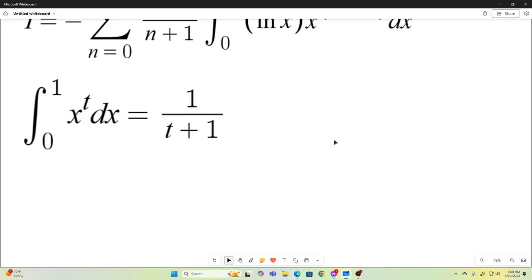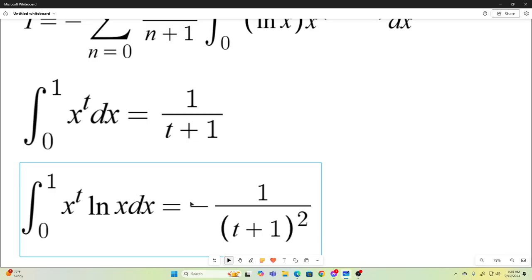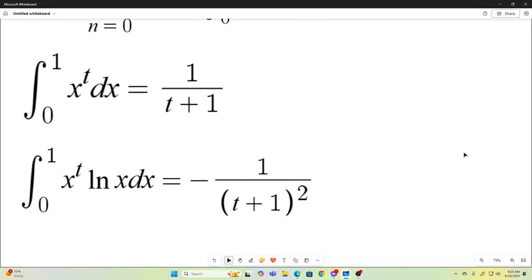Taking a derivative on both sides gives us this. The integral from 0 to 1 of x to the t natural log x dx is negative 1 over t plus 1 all squared.